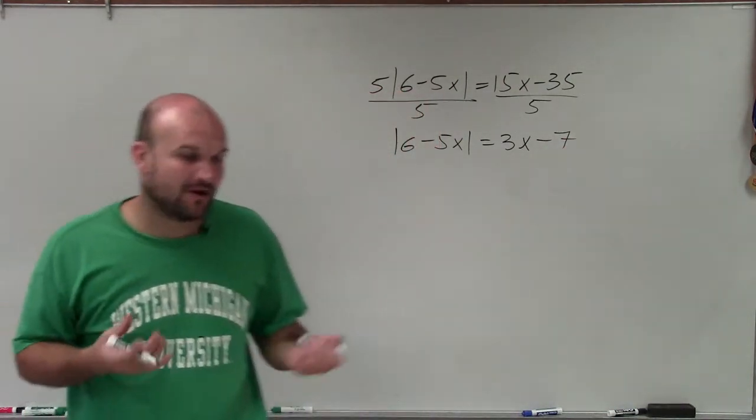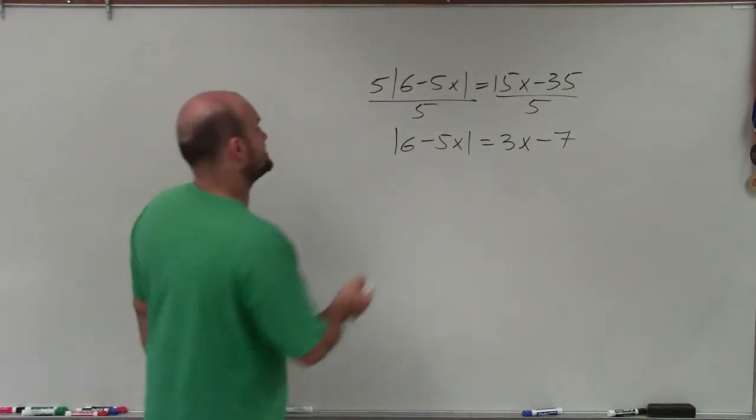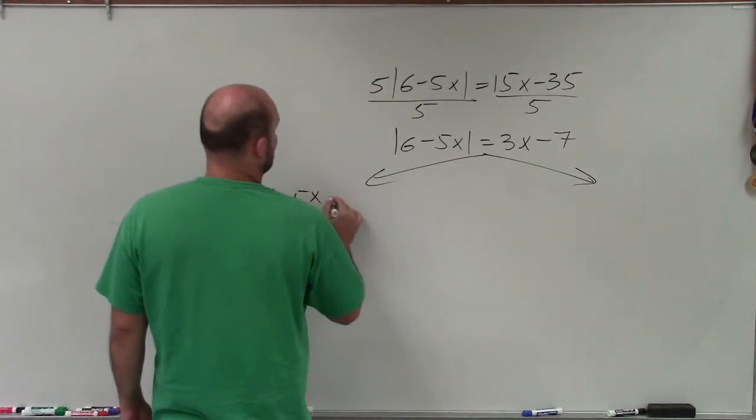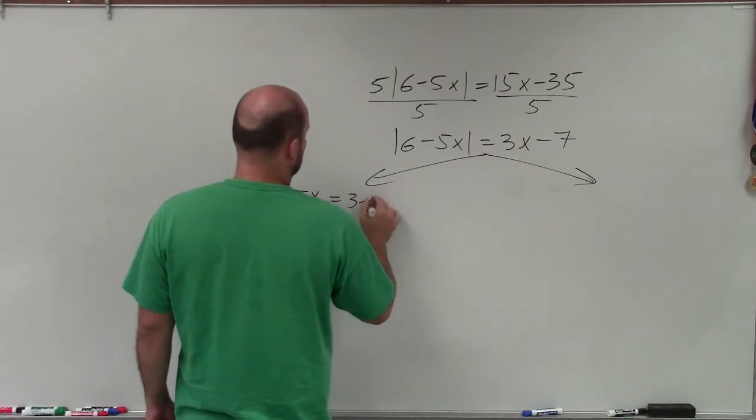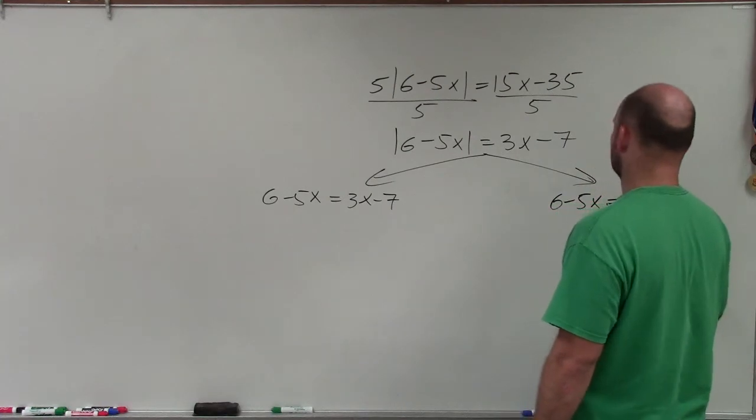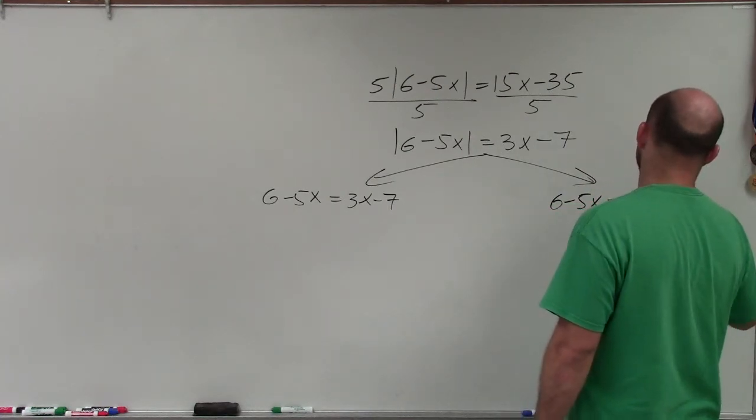Now that I have my absolute value isolated, now I can create my two cases. I'm going to create a positive as well as a negative case. So I have 6 minus 5x is equal to 3x minus 7, as well as the case 6 minus 5x is equal to negative 3x minus 7.